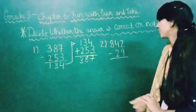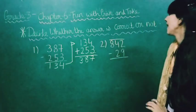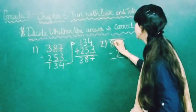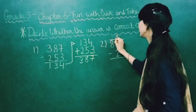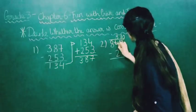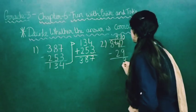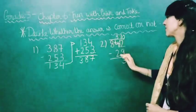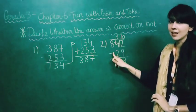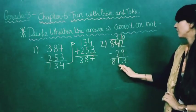Next example: 842. What do we subtract? 29. As we know, 9 is greater than 2, so we borrow from 4. 4 becomes 3. Here we write 10. 10 plus 2 is 12. 12 minus 9 gives 3. Then 3 minus 2 is 1. And here no number needs to be subtracted, so 8 stays. The answer is 813.